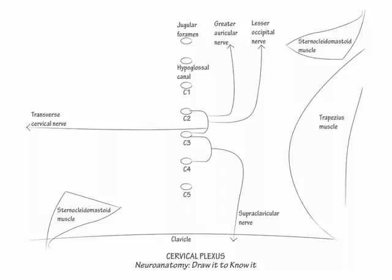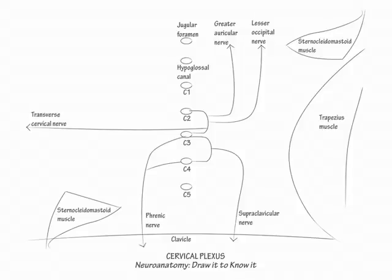Now let's draw the motor nerves of the cervical plexus. For this, we begin with the nerves that enter the anterior cervical triangle. The most important motor nerve derived from the cervical plexus is the phrenic nerve. Show it originate from the C3 and C4 cervical nerves and the C5 brachial plexus spinal nerve. Indicate it descends through the thoracic cavity to the diaphragm.